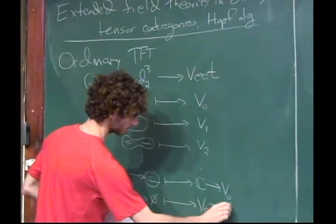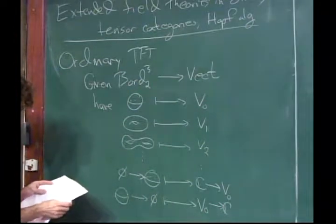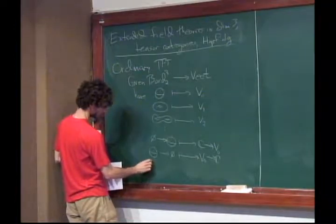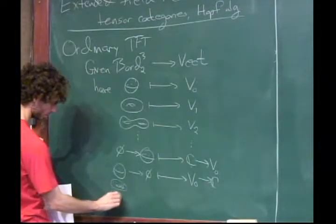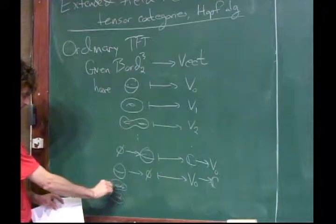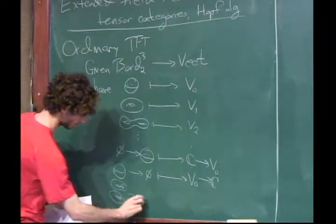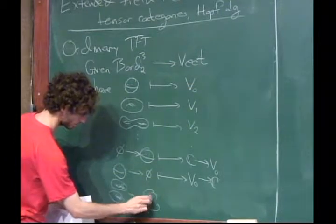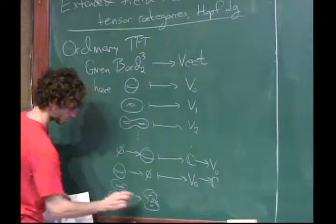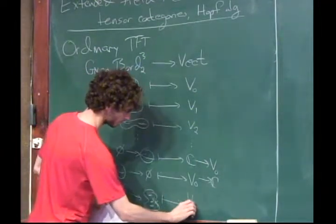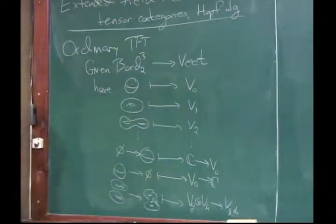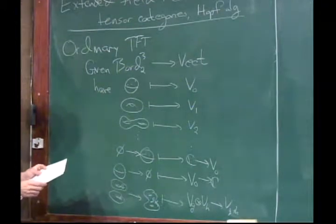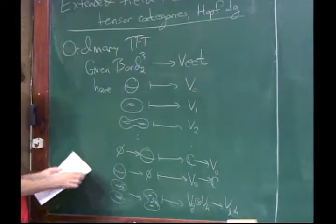That's a map from V0 to C. Now there are other things we can do: if we have two surfaces, one of genus G and one of genus H, we could glue a handle between them to get a surface of genus G plus H altogether. That gives us a map from VG tensor VH to VG plus H. So things are looking good so far, but then there's one more thing you can do.